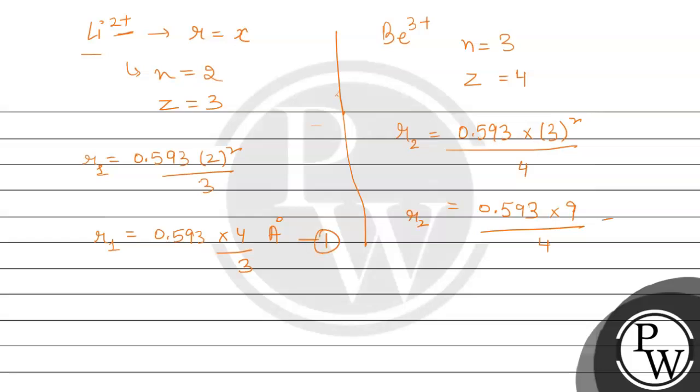This is the first and this is the second. Here r1 we can write as x because it's given in the equation. So when we divide equations 1 and 2, we can write r2 equals 0.593 multiplied by 9 over 4